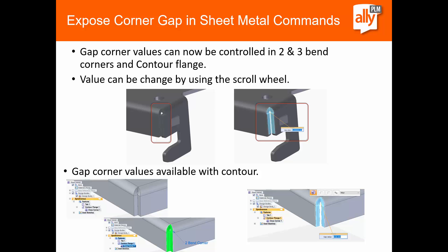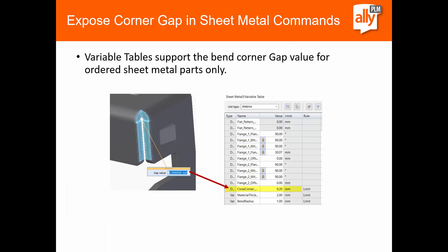Also, some new options in the sheet metal environment: the gap corner values. You can now control those in two or three bend corners and the contour flange. We have a gap value that'll pop up that you can change with the scroll wheel. That gap corner value in the ordered environment will be added into the variable table that you can then drive and edit from that location or use in any other calculations. That is in the ordered sheet metal environment only.